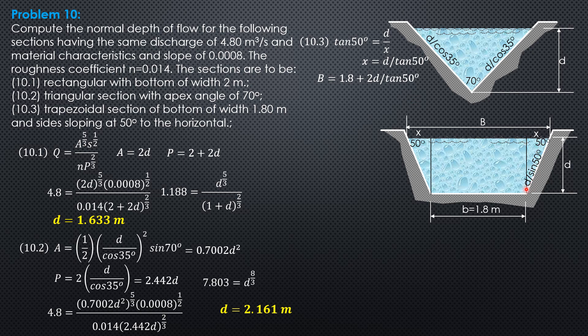Cosine 50 is D over hypotenuse, so hypotenuse is D over sin 50. Same is true with this. The perimeter is 1.8 plus 2 times D over sin 50.